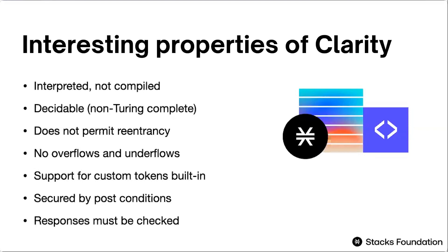What that basically means is that you can analyze and know for sure what the maximum amount of gas for a transaction is going to be. With a Turing complete language, you cannot know this beforehand — you actually have to run the transaction to figure out how much gas it will use. That's why with Ethereum you see gas estimation, whereas with Clarity that's unnecessary, because the analysis can already tell you the maximum runtime cost.